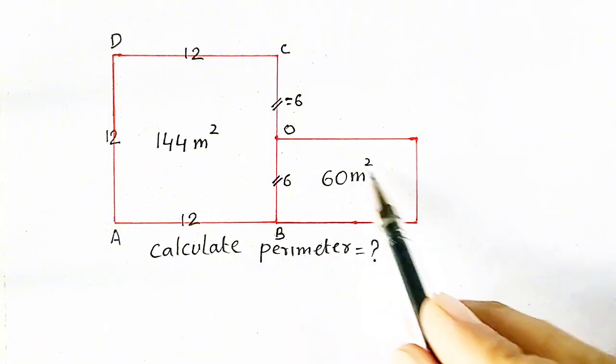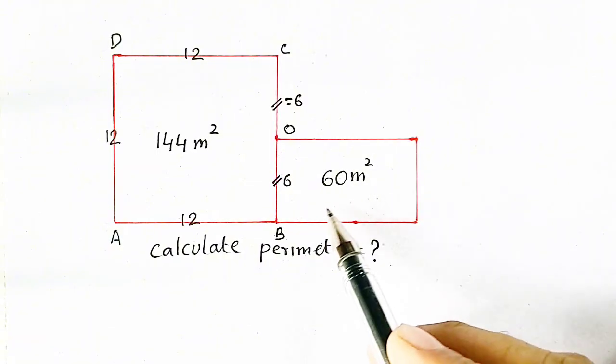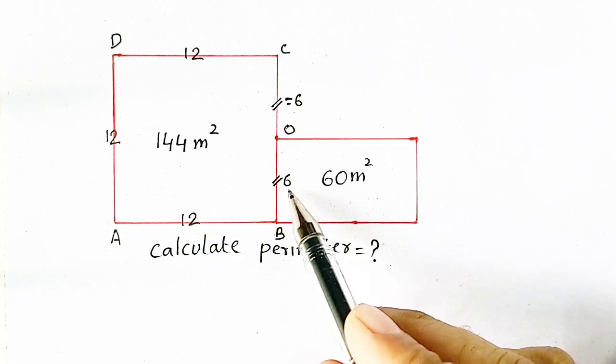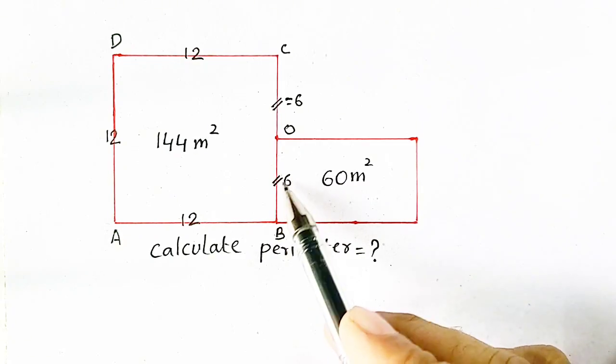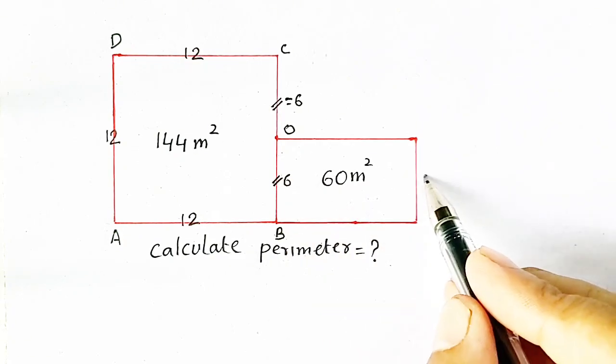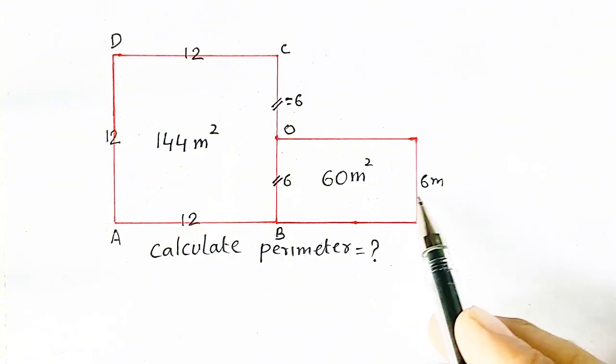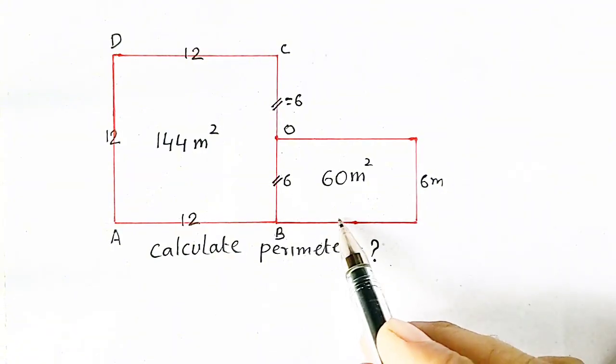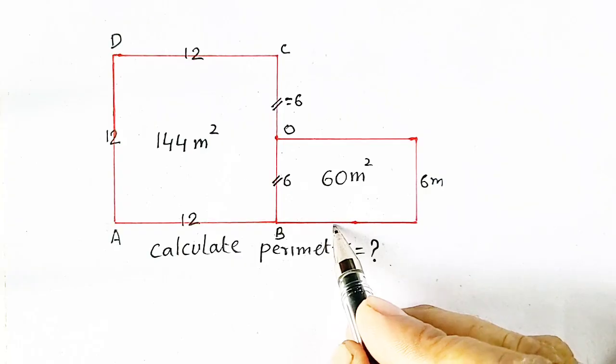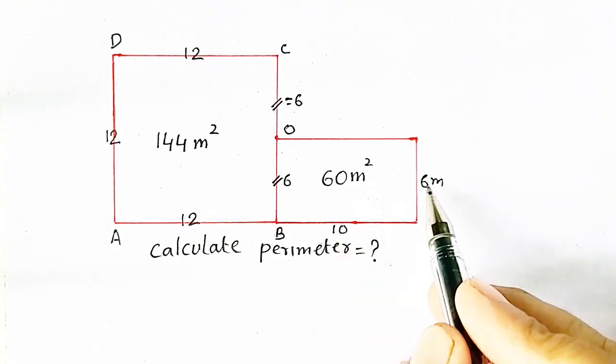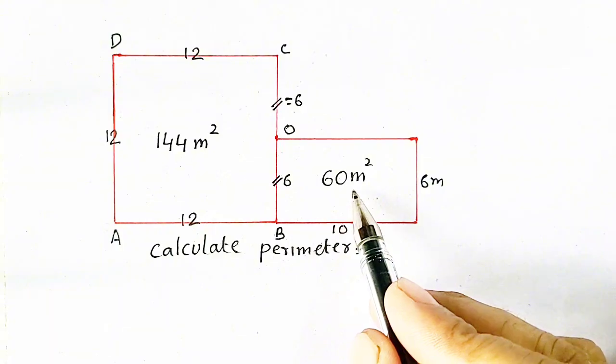And here, it is formed a rectangle of having area 60 meters square. And this side is 6, so this side will also be 6 meter. And it is width, so our length will be equal to 10. 10 times 6, means length times width, will form area.